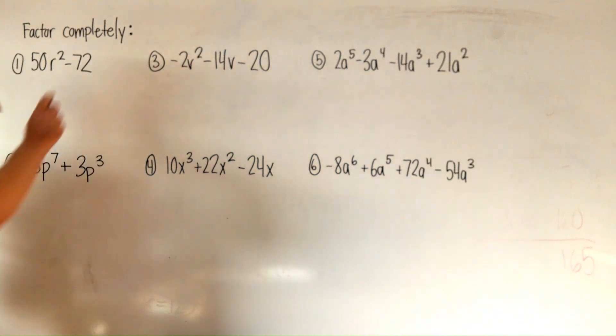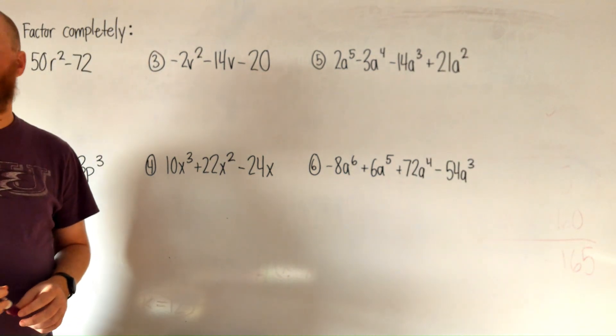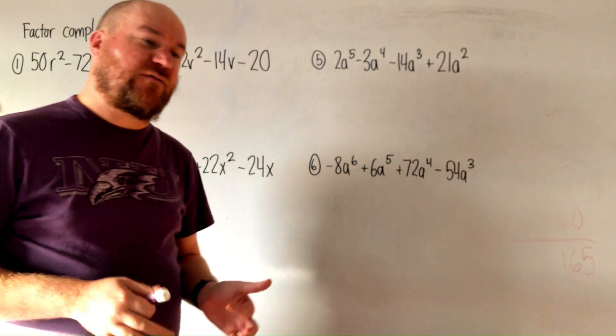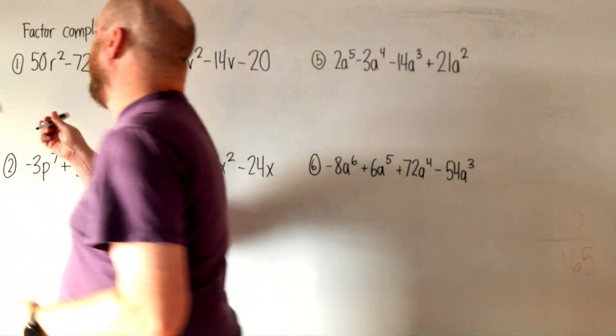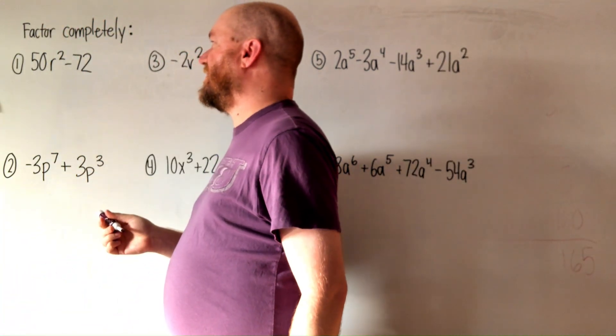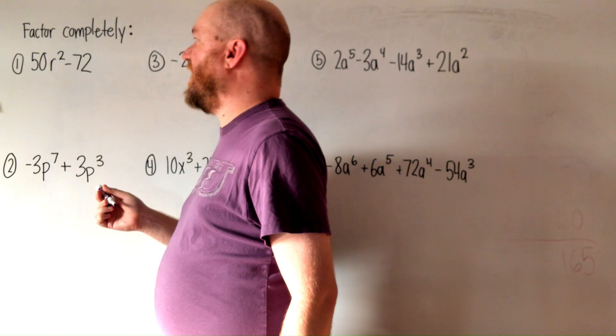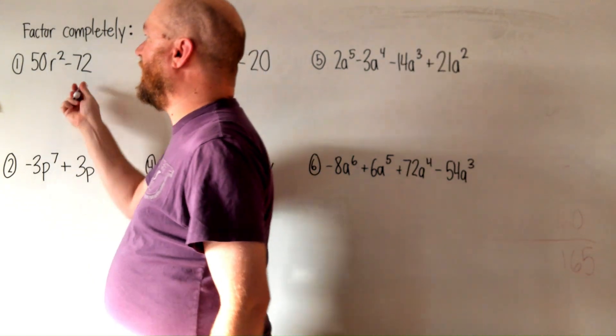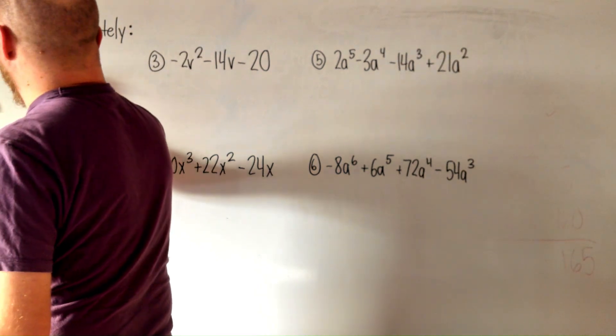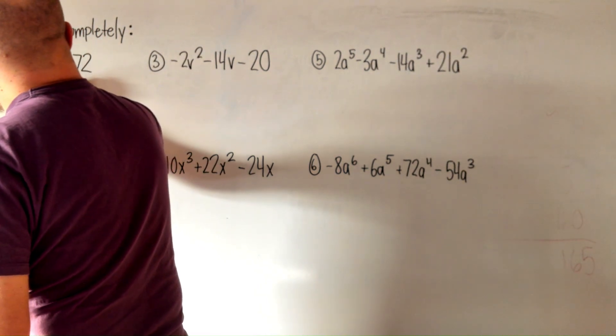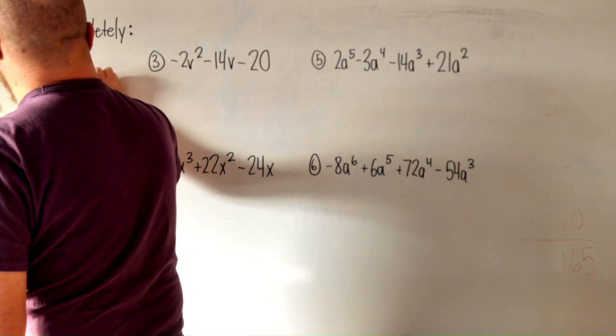So example one here, factor completely. We always should start with greatest common factor because that's usually one of the factoring methods you have to try. So in this question, 50R squared minus 72, there is a GCF. Both of these numbers are even. That's the biggest number that can go into them, two. And when we divide that we get 25R squared minus 36.